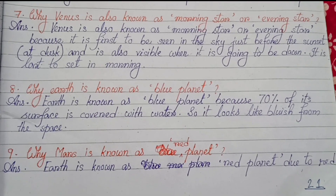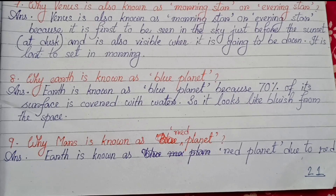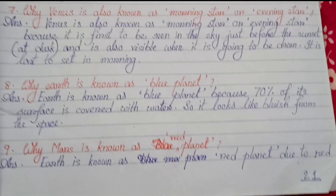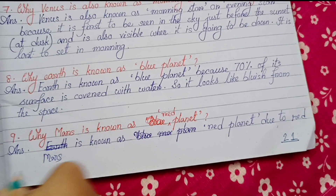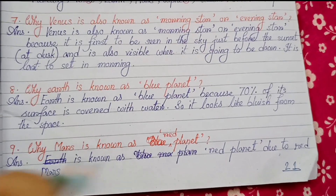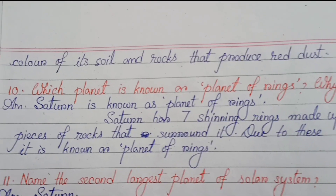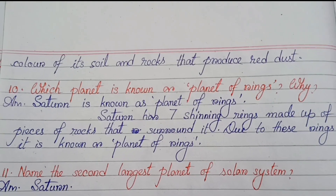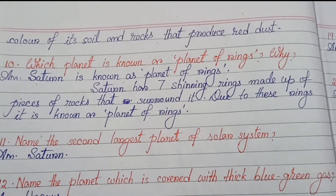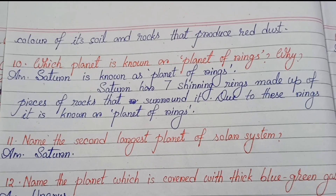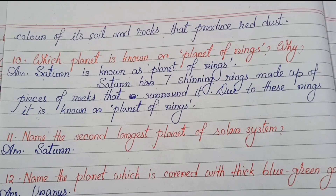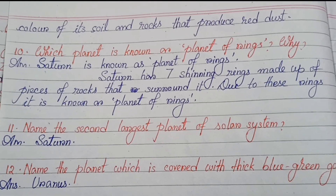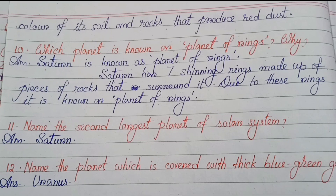Number nine: Why is Mars known as the red planet? Mars is known as the red planet due to the red color of its soil and rocks, which produce red dust. Number ten: Which planet is known as the planet of rings and why? Saturn is known as the planet of rings. Saturn has seven shining rings made up of pieces of rock that surround it, and due to these rings it is called the planet of rings.